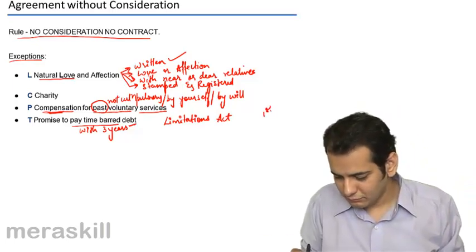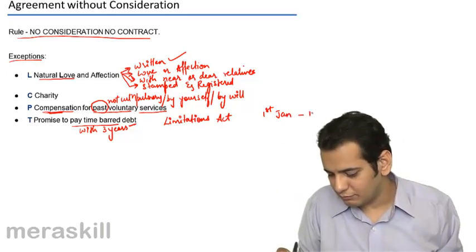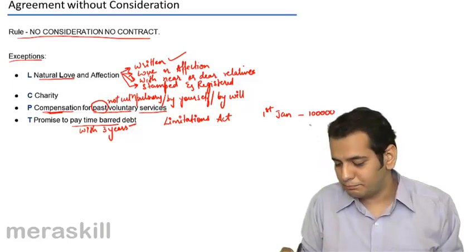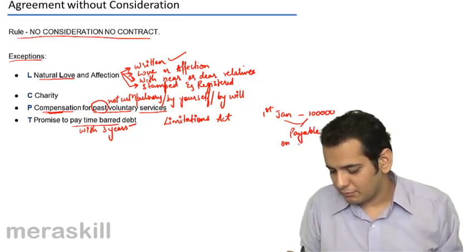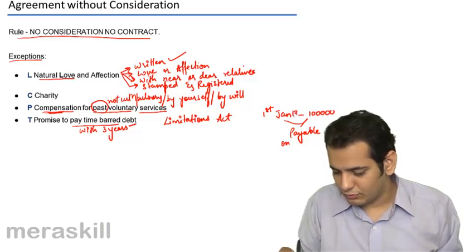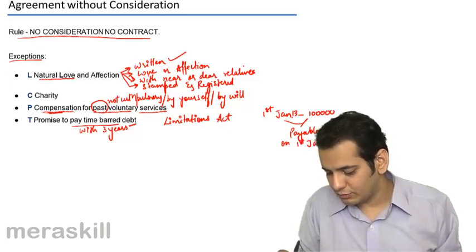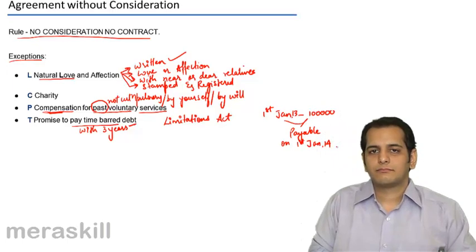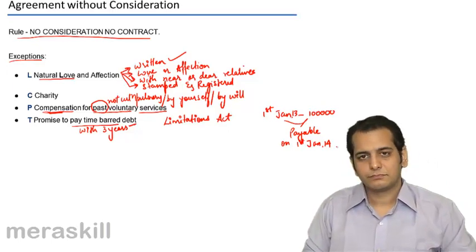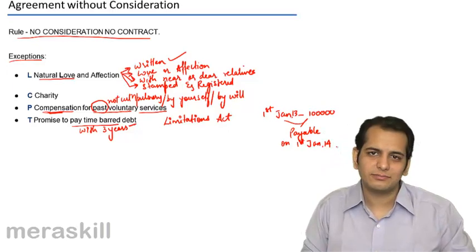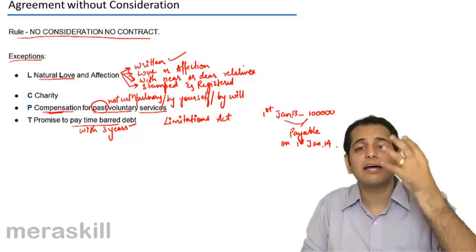Now let's say on 1st Jan, you give a loan to me for Rs. 1 lakh. Now this is payable on, let's say this is 2013, and this is payable on 1st Jan 2014. You gave me a loan for 1 year. Now on 1st Jan 2014, if I do not repay you the money, you are my creditor, I am your debtor. You have to receive money, I have to pay it to you.